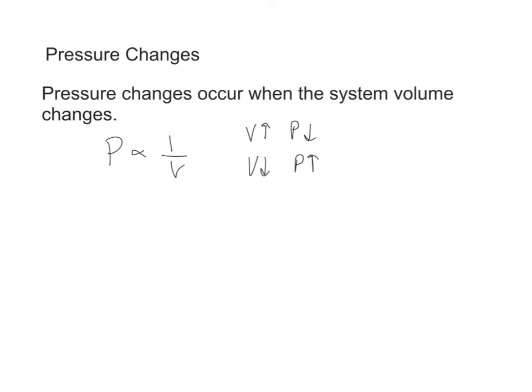The second type of disturbance are pressure changes that occur when a system's volume changes. To refresh ourselves, recalling the ideal gas law, pressure is inversely proportional to volume. Since they're inversely related, if I increase the volume of a system, I would expect the gas pressures to go down. If the volume is decreased, I would expect the pressure to go upward.